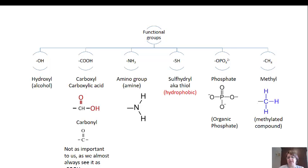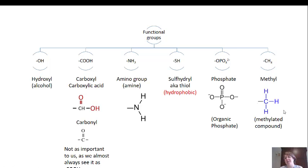The next group is phosphate groups — a phosphate ion surrounded by oxygens, with two of them having negative charges. This is often referred to as an organic phosphate group. The last group is the methyl group: a carbon surrounded by three hydrogens. We see these very frequently on many of our molecules, and we can refer to a compound as being methylated if it has methyl groups.